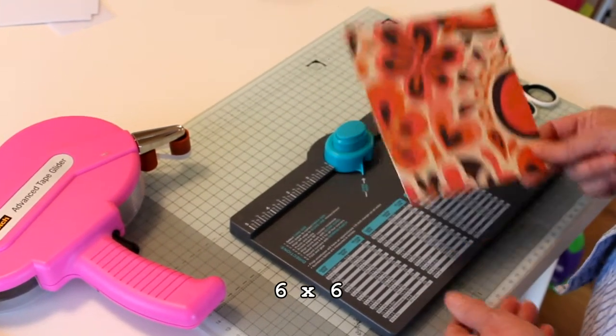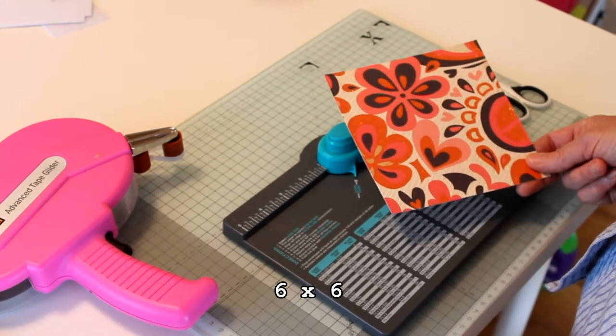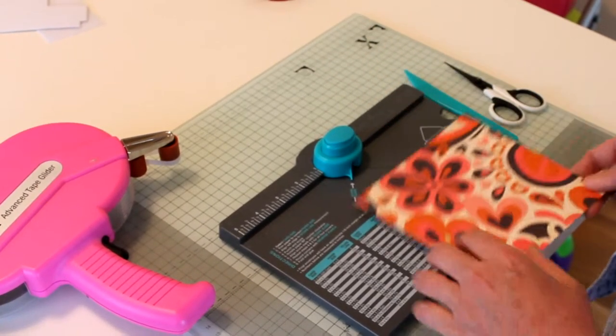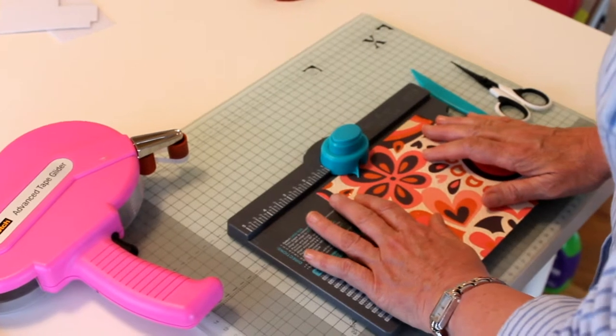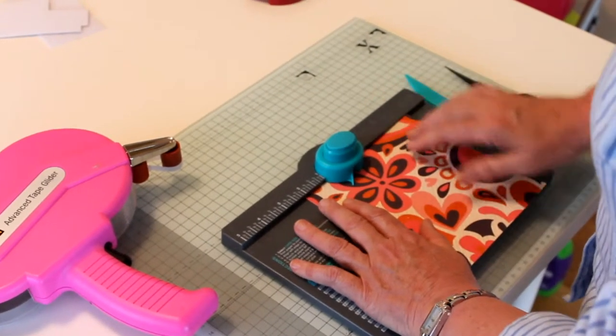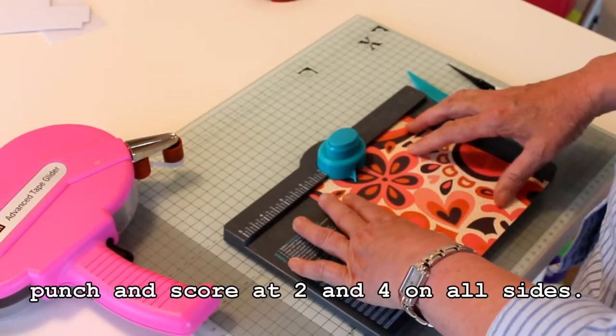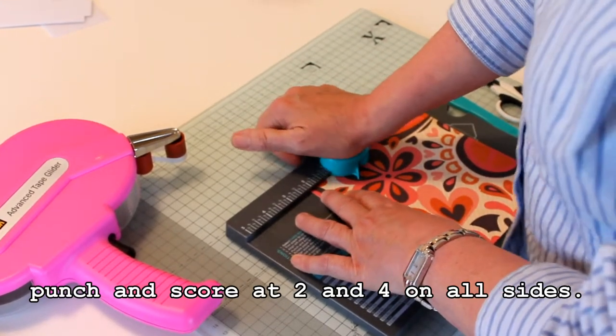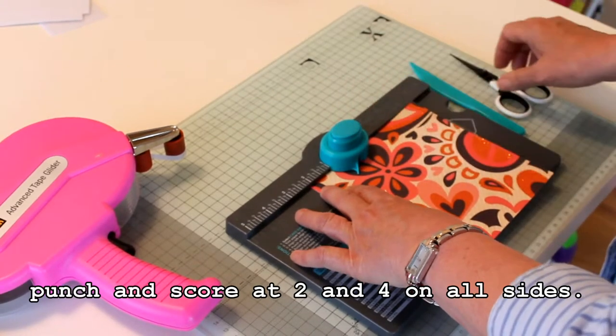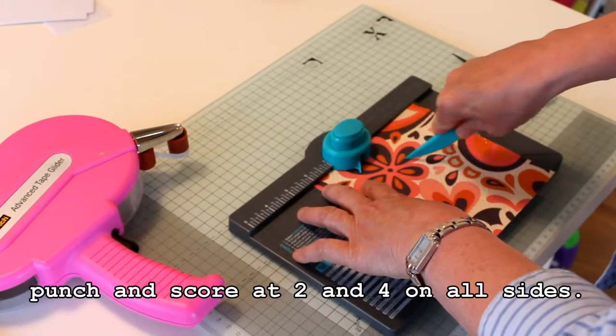This is a six by six piece of designer paper and you simply put it into the envelope maker. You punch it at two and score it, and then you move it along to four.